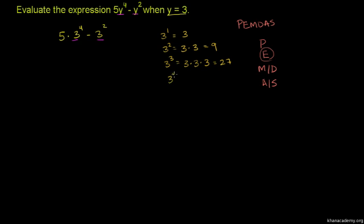3 to the power of 4 is equal to 3 times 3 times 3 times 3. And 3 times 3 is 9, and 3 times 3 is 9. So 9 times 9 gives us 81.